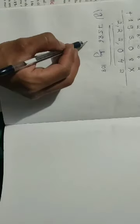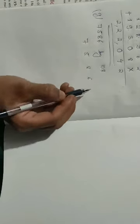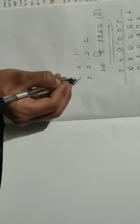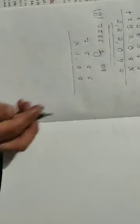Similarly, you can do questions E and F as homework. Now we are moving to question number G. So, 7586 multiplied by 108. Again, you will start from the back.